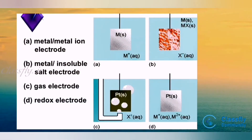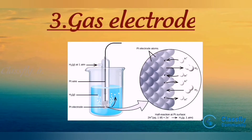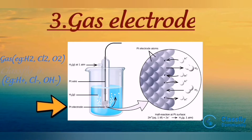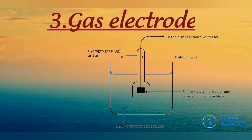The third type is the gas electrode. A gas electrode consists of a gas — for example, hydrogen, chlorine, or oxygen — in contact with a solution containing the ion derivable from that gas, such as H⁺, Cl⁻, or OH⁻. This reaction must be carried out on the surface of an electrochemically inert conductor such as platinum.